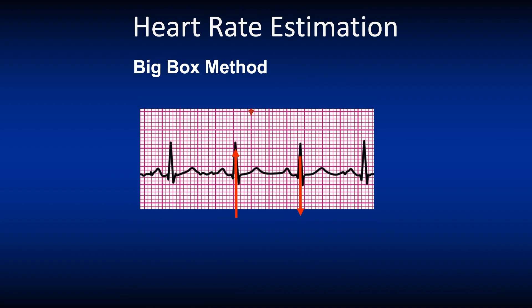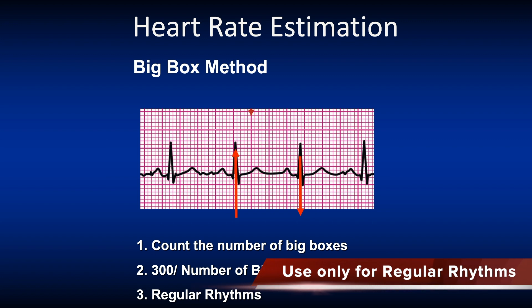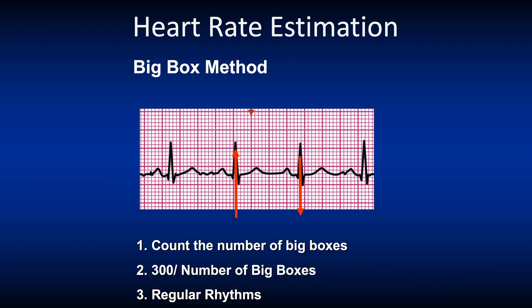Another option is to use the big box method. Count the number of big boxes between the QRS complexes. Then you take 300 divided by the number of big boxes and that will give you an average heart rate. This technique works well with regular rhythms. Counting the big boxes between the R waves: one, two, three, four — so 300 divided by 4 equals 75.